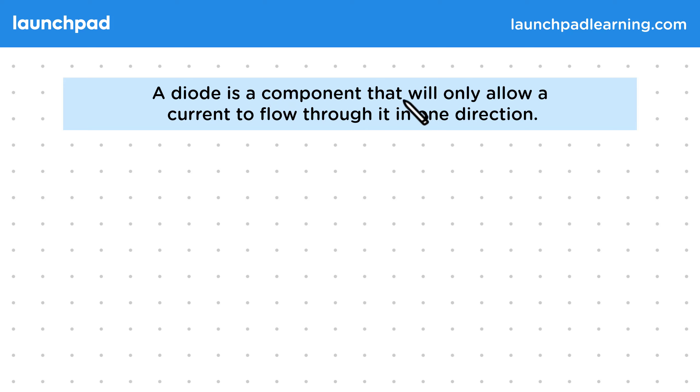A diode is a component that will only allow a current to flow through it in one direction. You might also see these referred to as semiconductor diodes, but you can just call them diodes at GCSE.